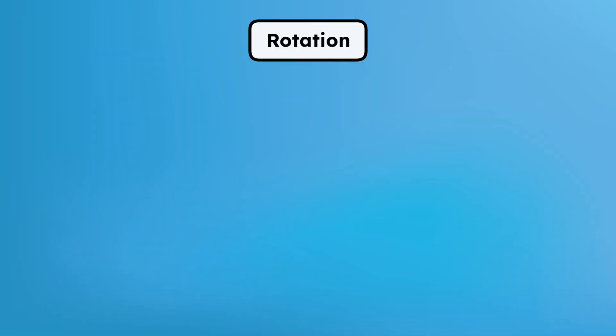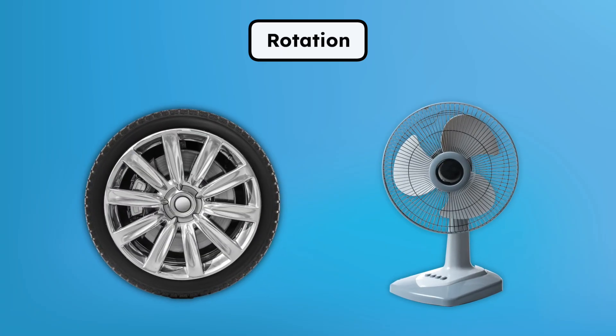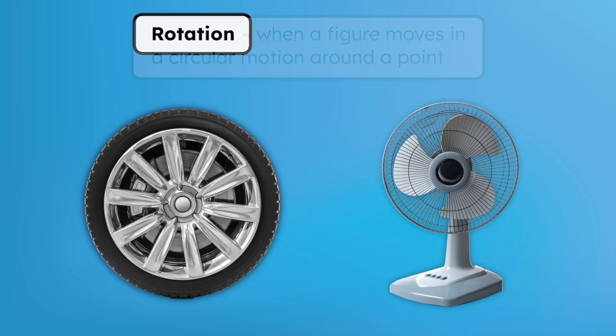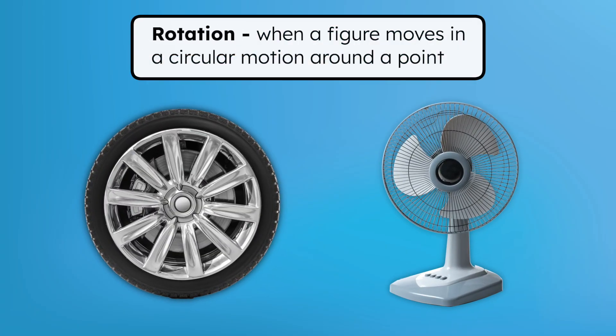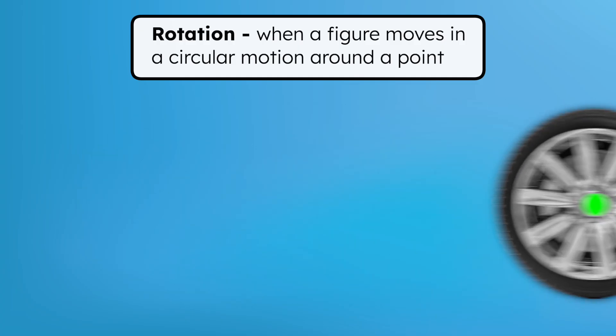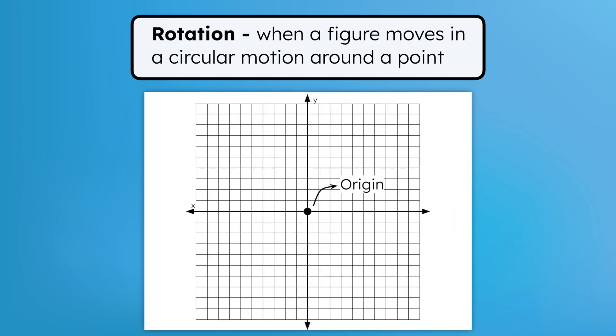The next transformation is rotation. What are some things that rotate? Whether it's the wheel of a car or an electric fan, rotation is when a figure moves in a circular motion around a point. In this course, the origin will be that point of rotation. That's 0, 0 at the center of the coordinate plane.